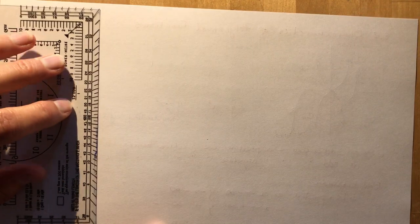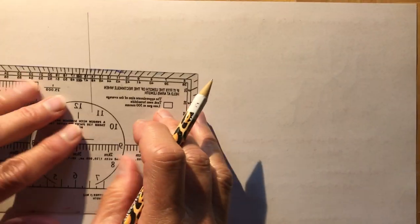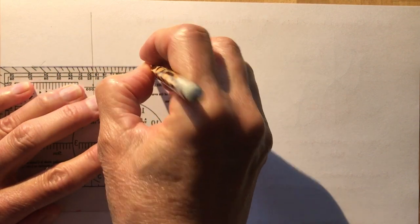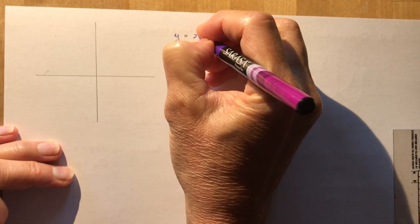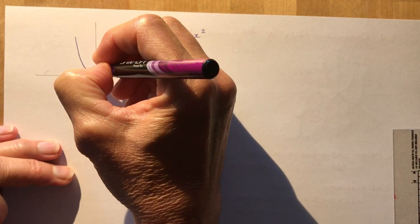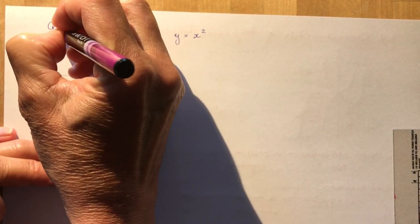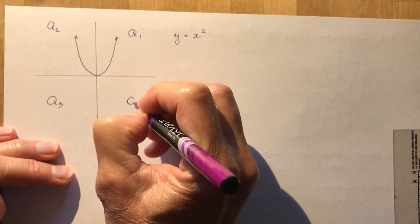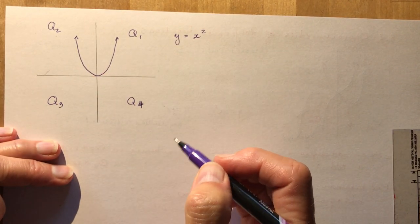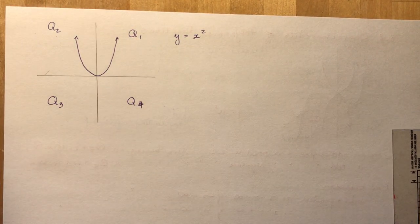Now let's talk about what happens if we have an even degree. For even degree, you want to think about a parabola, because that's the most basic even degree function you know of. So y = x² — what does it look like? Like this. It has a positive leading coefficient, and it starts in Q2 and ends in Q1. Any positive even-degree function will do the same.